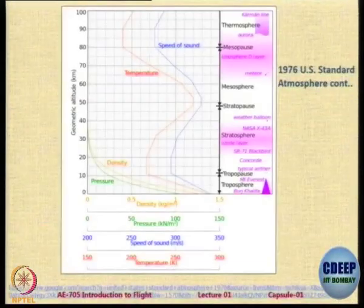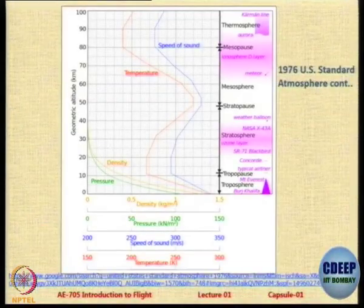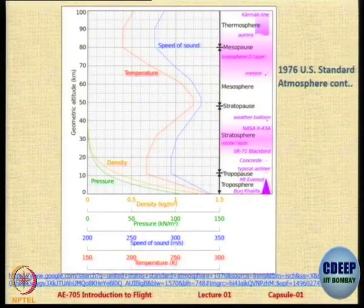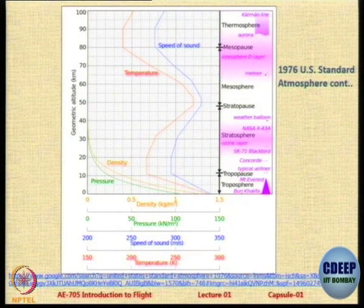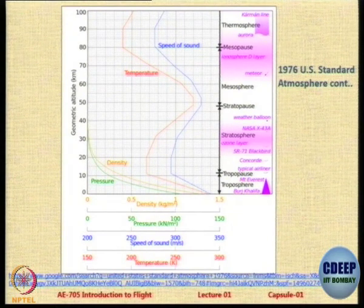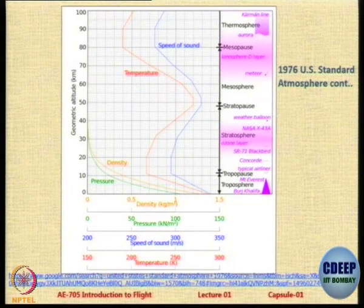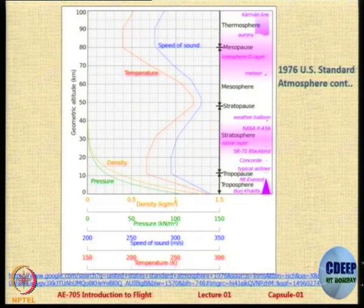Let us look at the chart again. This shows the variation of pressure, density, and temperature for the US standard atmosphere.